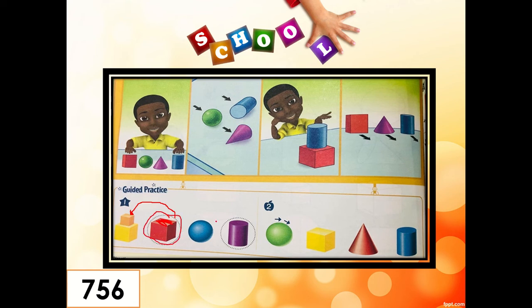How about the next figure — this sphere? Do you think the sphere can stack? No. Why KG? Because if you put this solid figure on top of this one, it will not stay on top. What will happen? Yes, it will just roll and fall. So, this solid figure cannot stack.